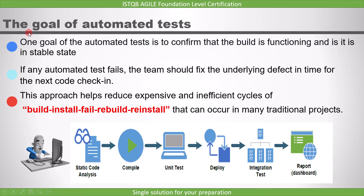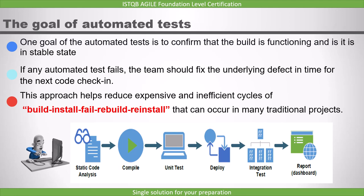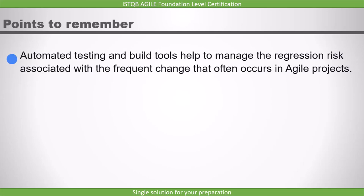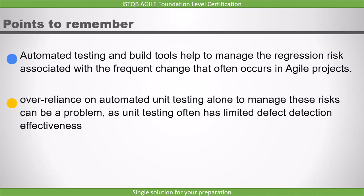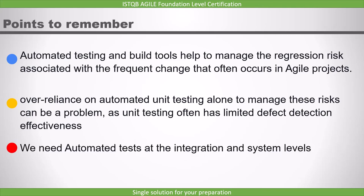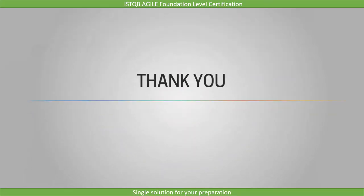To summarize, the three goals are: to confirm that the build is functioning and it is in a stable state; if any automated test fails, the team should fix the underlying defect in time for the next code check-in; and this approach helps reduce inefficient cycles of build, install, fail, rebuild, reinstall that can occur in many traditional projects. Remember: automated testing and build tools help to manage the regression risk associated with frequent changes that often occur in Agile projects. However, over-reliance on automated unit testing alone can be a problem, as unit testing often has limited defect detectiveness — automated tests at the integration and system levels are also required.